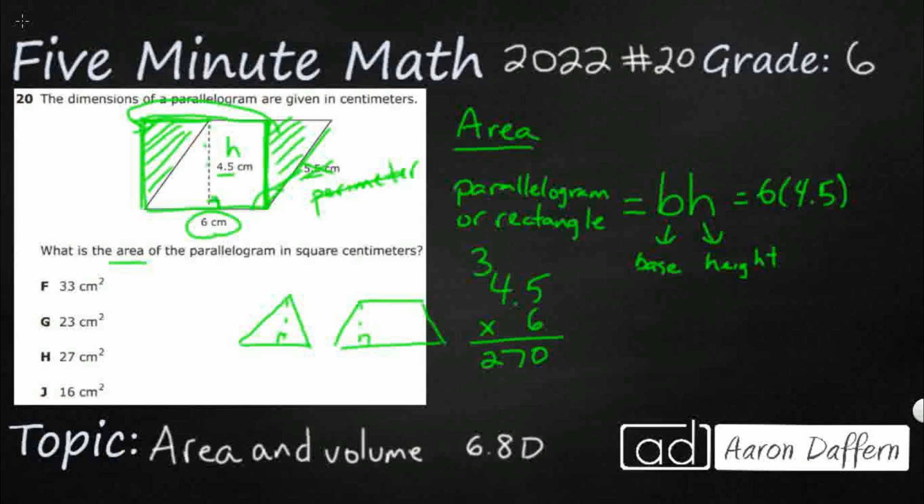You might be thinking, whoa, 270, that's a bit big. Well, once you're done multiplying, that's when you bring the decimal back in. You think, how many digits are behind the decimal in the factors? Well, I've got one digit behind the decimal here. I've got no digits behind the decimal here because that's just 6. It's a whole number. There are no decimals. So, I need one digit behind the decimal in my product to match the one digit behind the decimal in my factors.